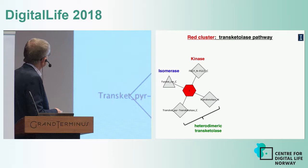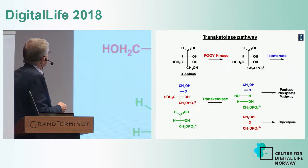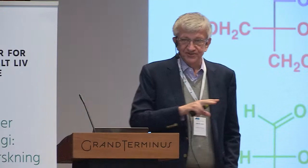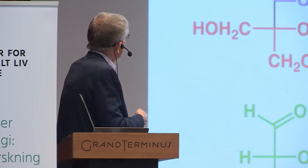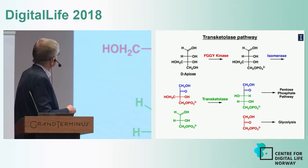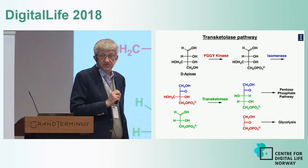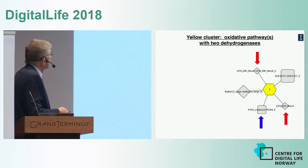The red cluster encodes one catabolic pathway, and the yellow cluster encodes three catabolic pathways which we have deconvoluted. Looking at the neighbors of the red cluster, there is a heterodimeric transketolase, a kinase, and an isomerase. This pathway is that apiose is phosphorylated to make apiose-4-phosphate; there's then an isomerase which makes apiolose-4-phosphate; and then a transketolase that takes the top two carbons and transfers them to glyceraldehyde-3-phosphate, generating xylose-5-phosphate and dihydroxyacetone phosphate — entering the pentose phosphate pathway and glycolysis.